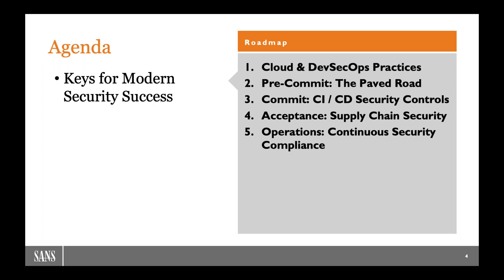Let's take a look at our agenda today. I'm going to go through five main sections. We'll go into some cloud and DevOps practices and give you some resources to work these things into your lifecycle. Then we'll go through four key controls: the paved road, continuous integration and continuous security controls, managing supply chain security, and continuous security compliance.